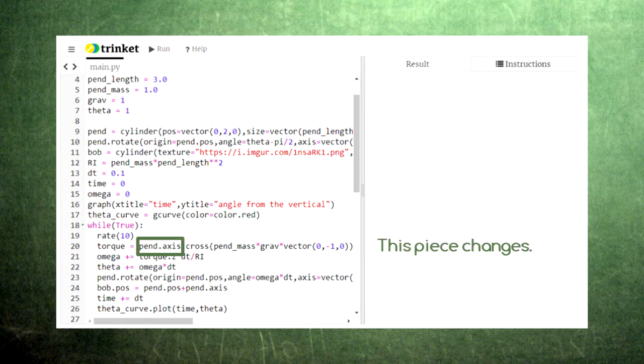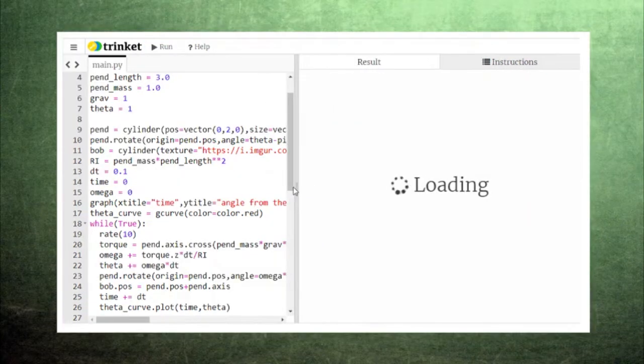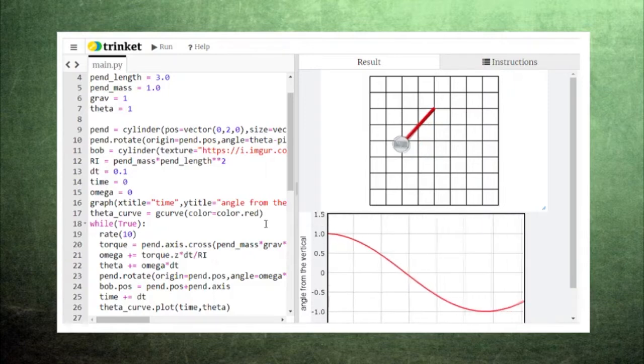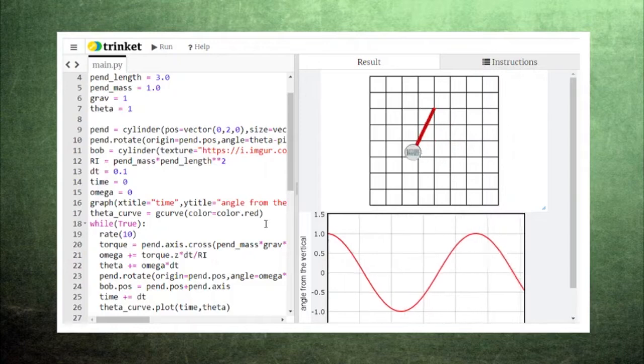Although the force of gravity always points downward, the pendulum arm's direction will change throughout the motion. When we run the code, we can see the pendulum swing back and forth and note that it swings the fastest at the bottom of its arc, just like how a spring moves the fastest in the middle of its oscillation.